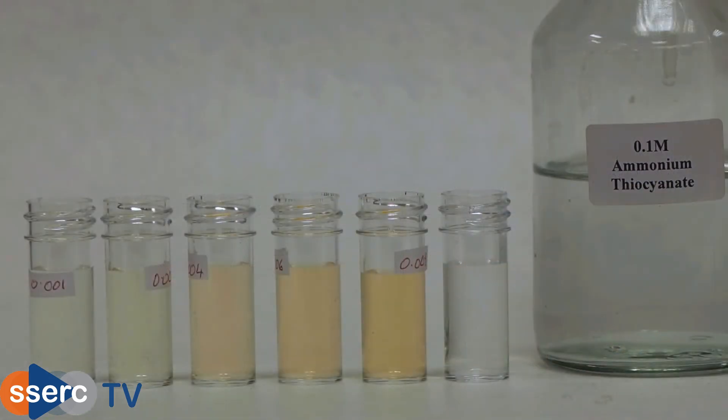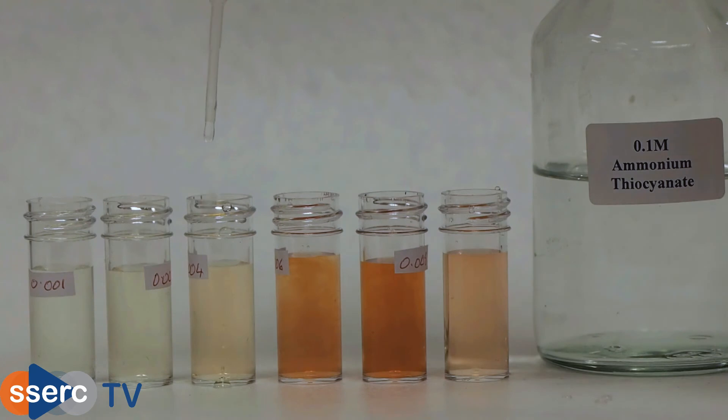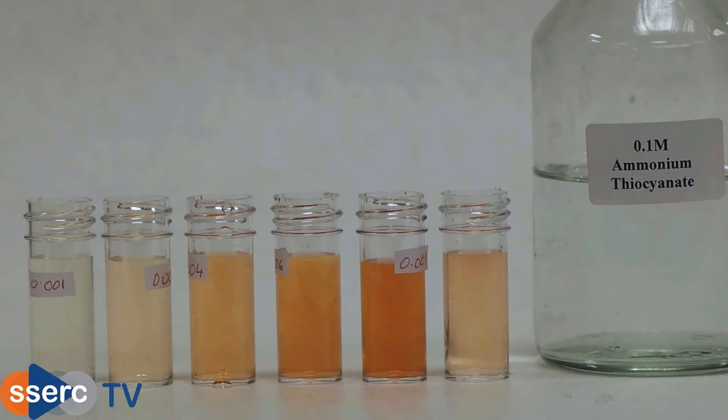Once that's done, we add 0.5 cubic centimeters of ammonium or potassium thiocyanate solution to each of the standards and to your tea sample. Thiocyanate ions form an intense red colored complex with the iron three ions, which makes it much easier to determine the concentration.